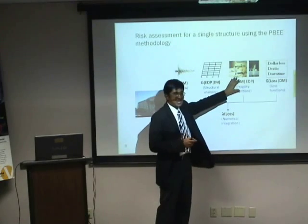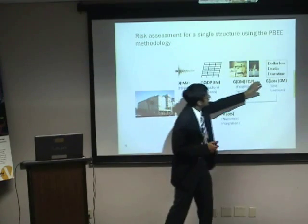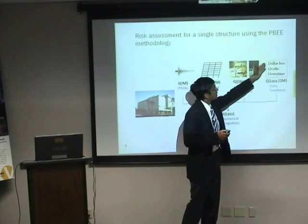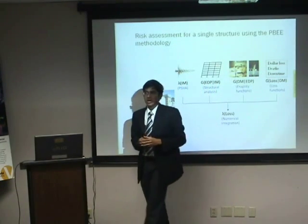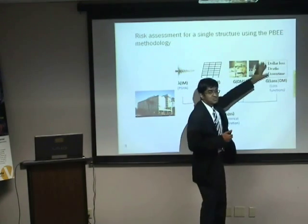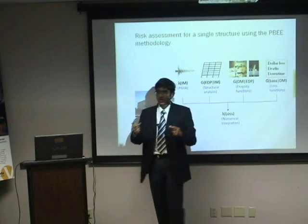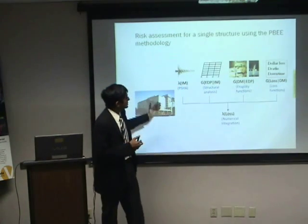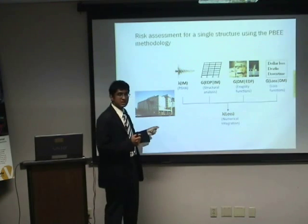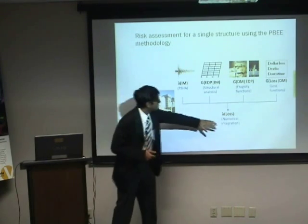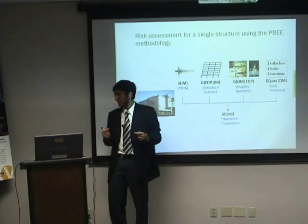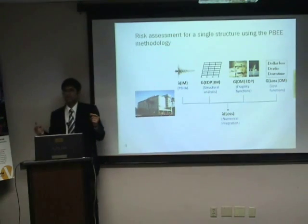Once we've quantified what happens to the structure, we look at our performance measures. A lot of times there are three Ds: dollars, deaths, and downtimes — and that's what we are interested in. We put the four individual components together using numerical integration to obtain the exceedance rates of different performance measures — in other words, what's the chance you'd observe a million-dollar loss and things like that.